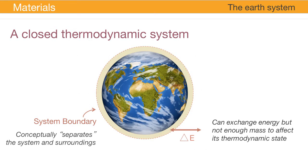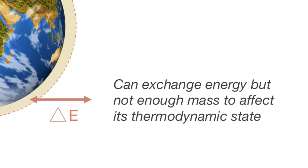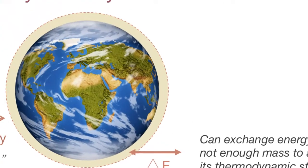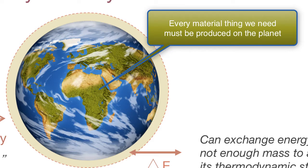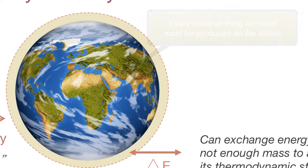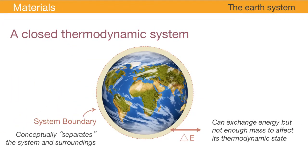Recall that the earth is effectively a closed thermodynamic system. This means it can exchange energy with its surroundings but not enough mass to affect its thermodynamic state. The consequence of the earth being essentially a closed system is that all that is needed for life must be produced on earth from the things that were already on earth, and all that is produced in the form of waste must either be absorbed on earth or accumulated on earth. What does this mean for our daily use of materials in different forms?